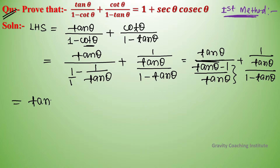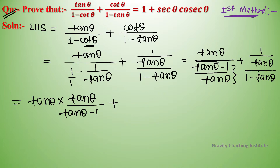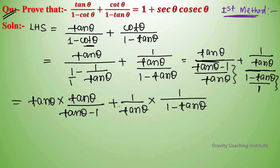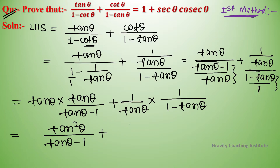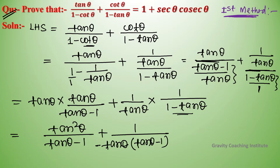Simplifying, we get tan theta upon (tan theta minus 1) divided by tan theta, plus 1 upon tan theta upon (1 minus tan theta). Taking the reciprocal, this becomes tan squared theta upon (tan theta minus 1) plus 1 upon tan theta. Taking (tan theta minus 1) as LCM, we get a combined fraction.